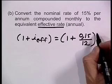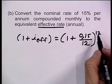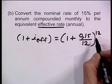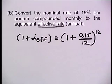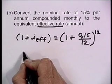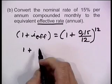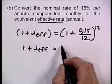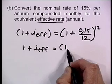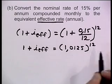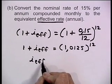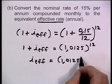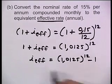You only work the formula within the year. That gives us to the power of 12. Remember, this conversion only works for one year — we work it for the year and then use it later on. Using the calculator, it's 1.015 to the power of 12, which equals 1.1607... minus one, taking one to the other side.